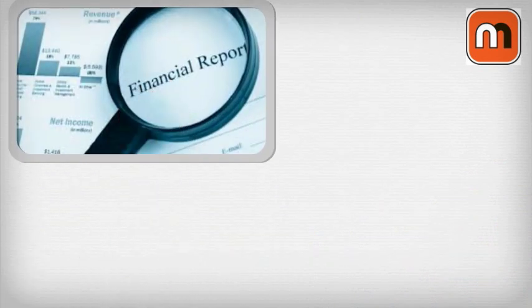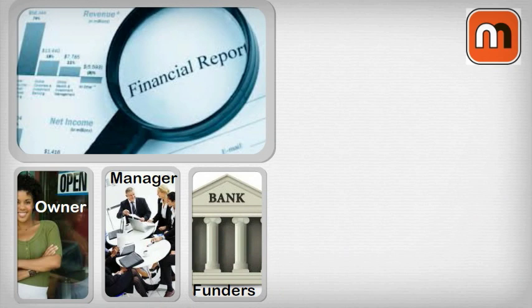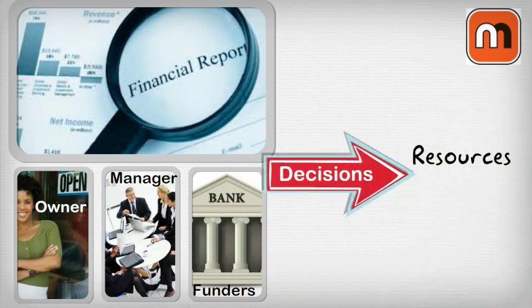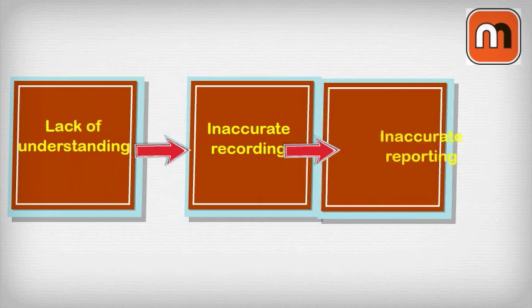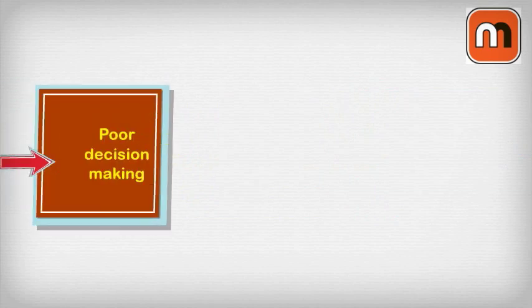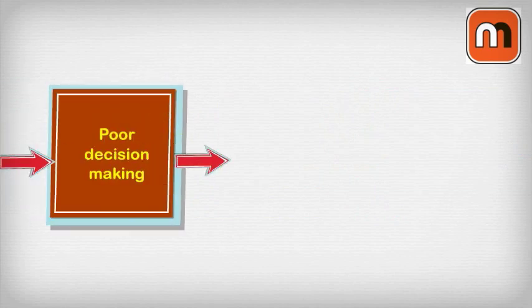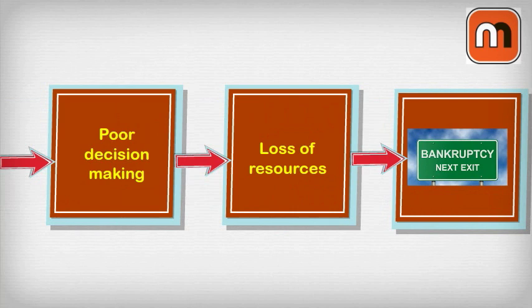The reports produced by the double entry bookkeeping system help stakeholders in a business — like owners, managers and funders — to make informed decisions about the resources and the direction of their businesses. A lack of understanding in debits and credits could lead to inaccurate recording of financial transactions, which leads to inaccurate reporting on the financial status of a business, which then leads to poor decisions being made about the allocation of financial resources, and could ultimately lead to the loss of resources or much worse.